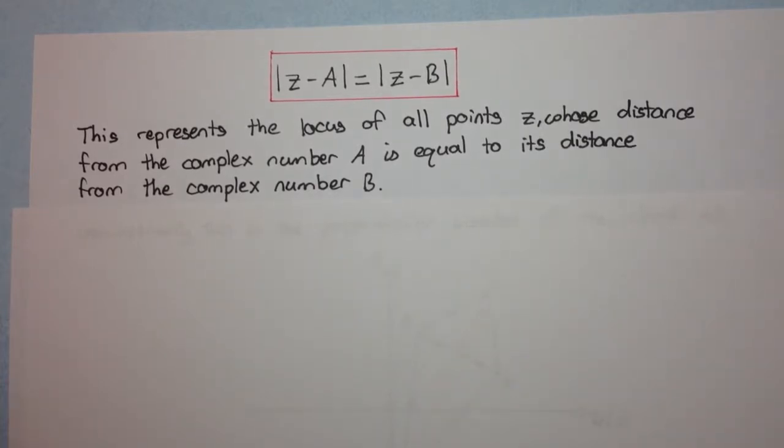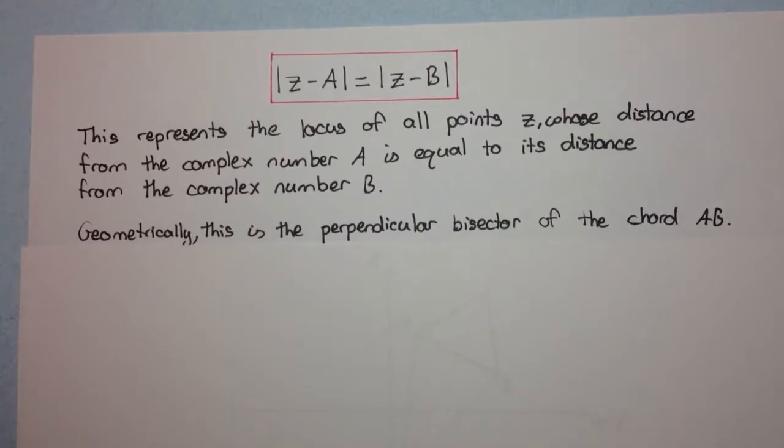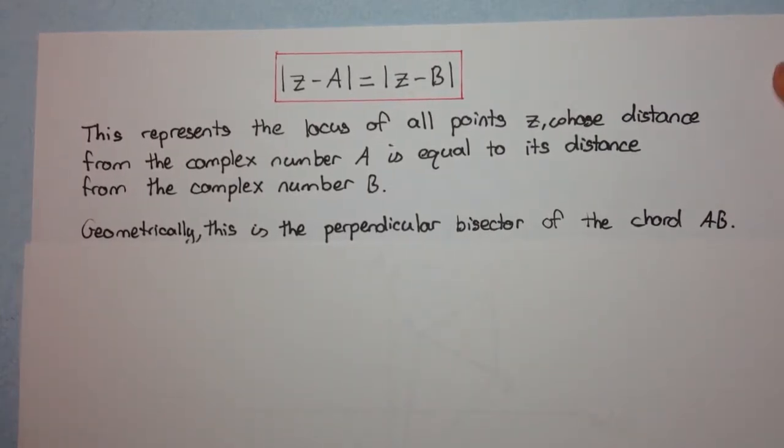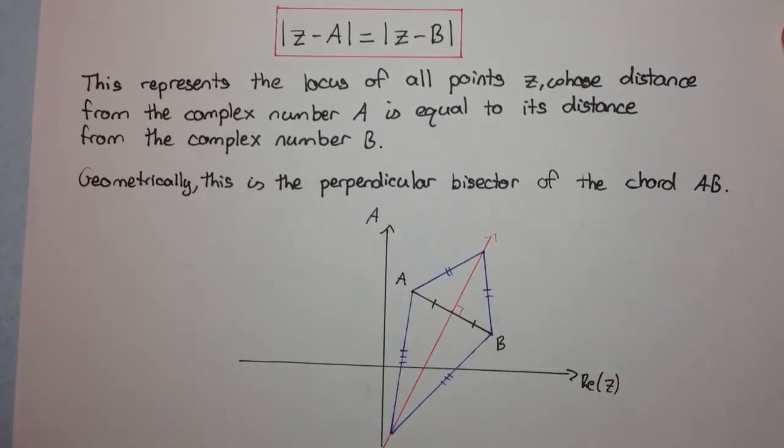Okay, so what is this geometrically? Geometrically, this is the perpendicular bisector of the chord ab. Now that might sound very formal or very complicated in words, but let's have a look at it in terms of an image.